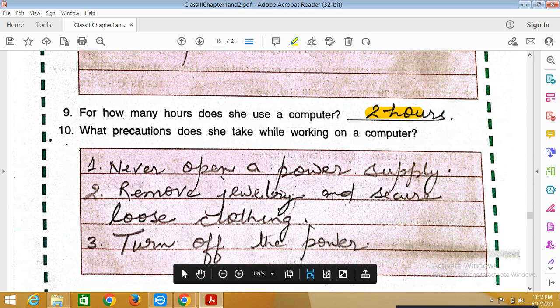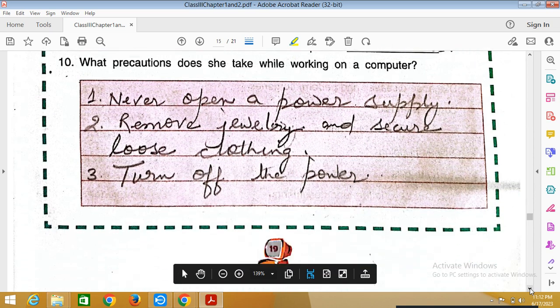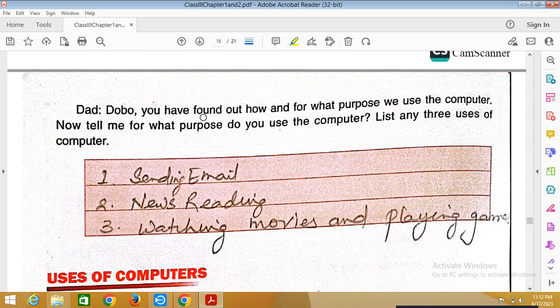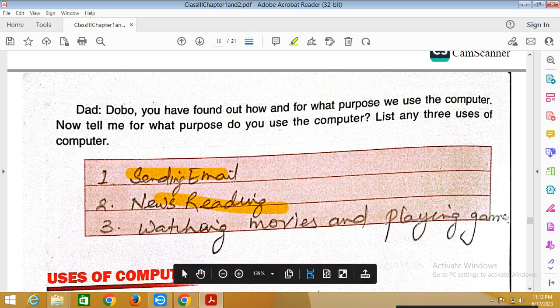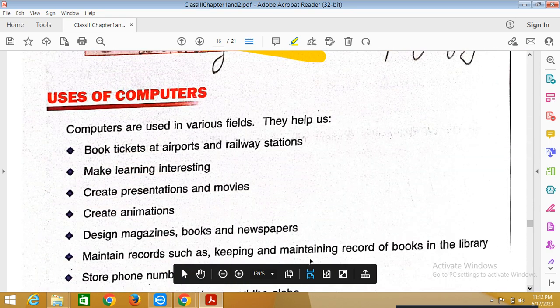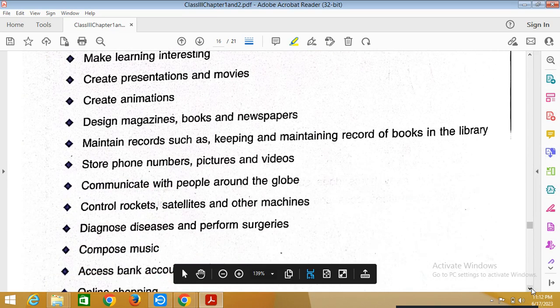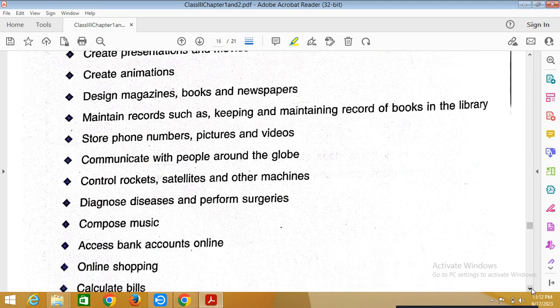Computer turn off the power when work is complete. Dad, Dobo, you have found out how and for what purpose we use the computer. Now tell me for what purpose do you use the computer? List any three uses of it: email send, news reading, watching movies and playing games. Many other uses are given: make learning interesting, create animations, store phone numbers. Compose music, control rockets, access bank accounts online.